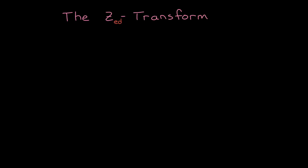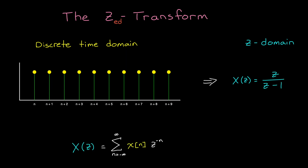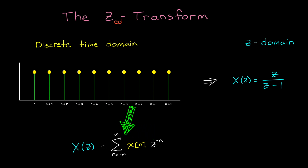The Z-transform is a mathematical tool that converts discrete time domain signals or systems into its Z-domain representation. This is what the two-sided Z-transform equation looks like. We start with a time domain signal that is sampled periodically, where n is the sample number. We then multiply each sample by the variable Z raised to the negative sample number, and then we sum the result across the entire signal.